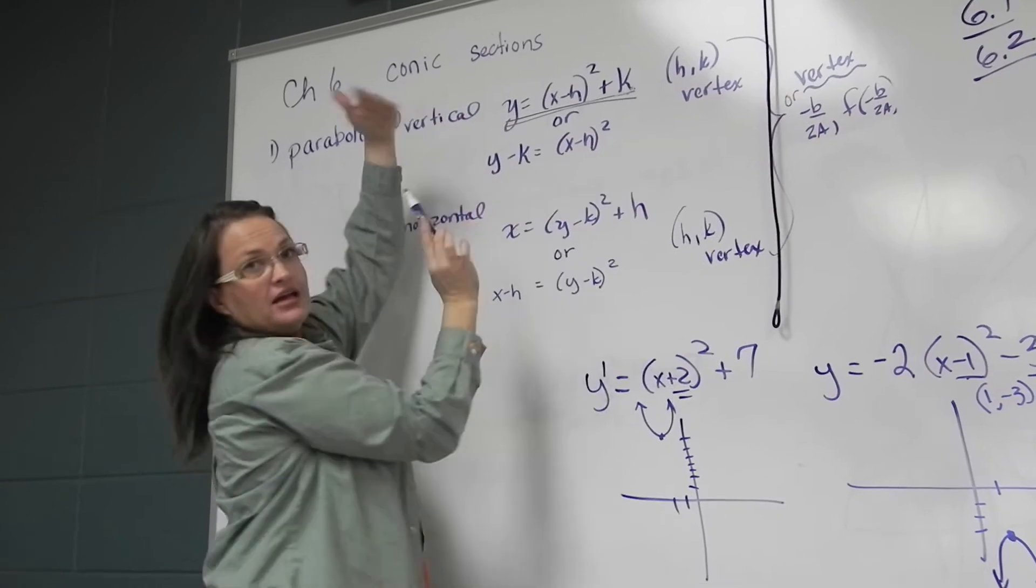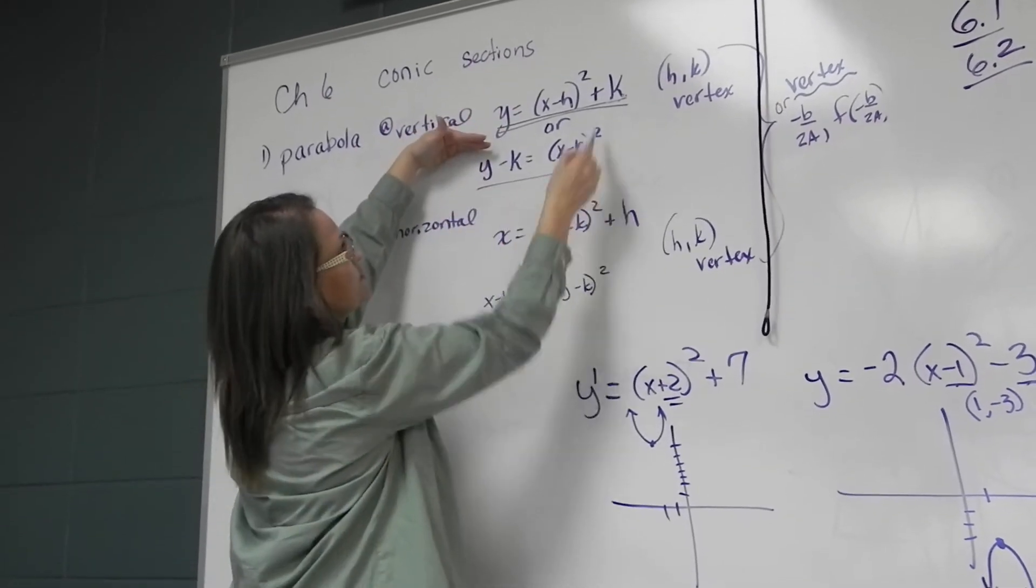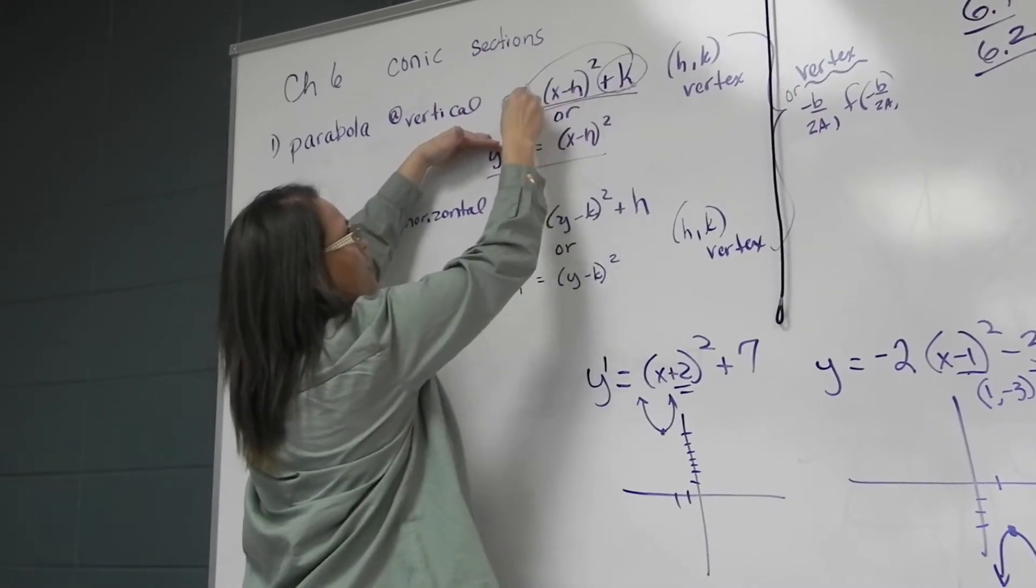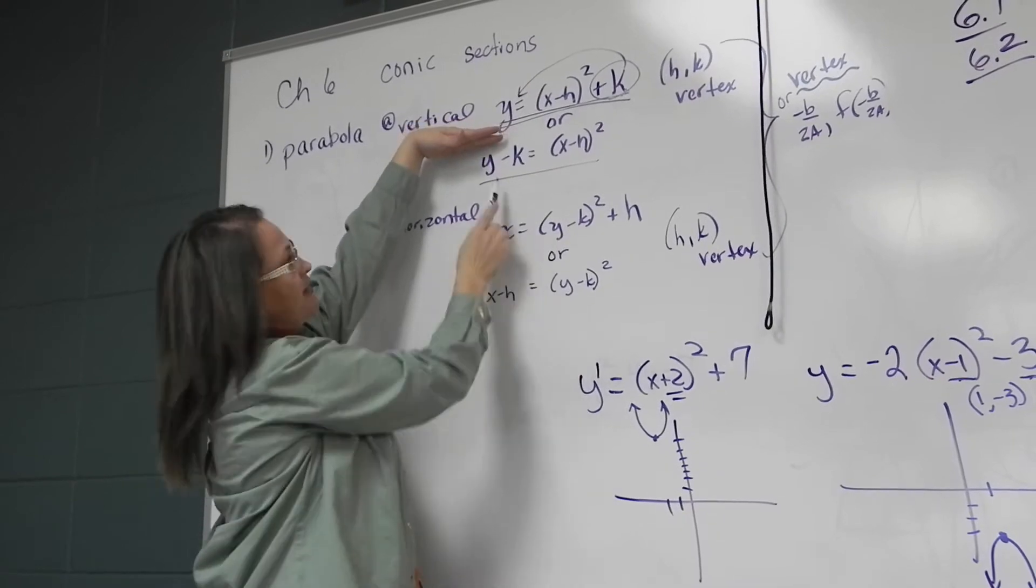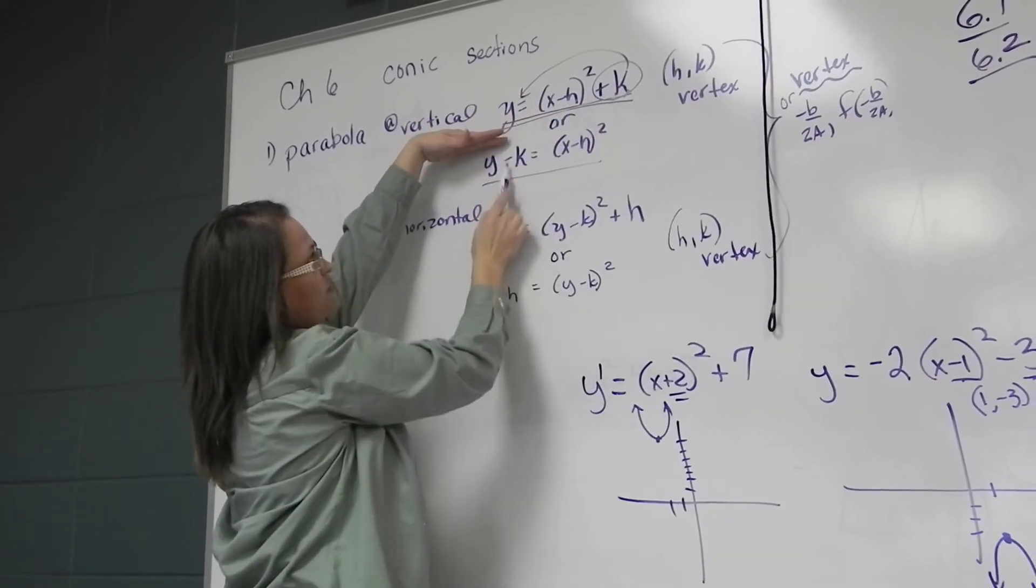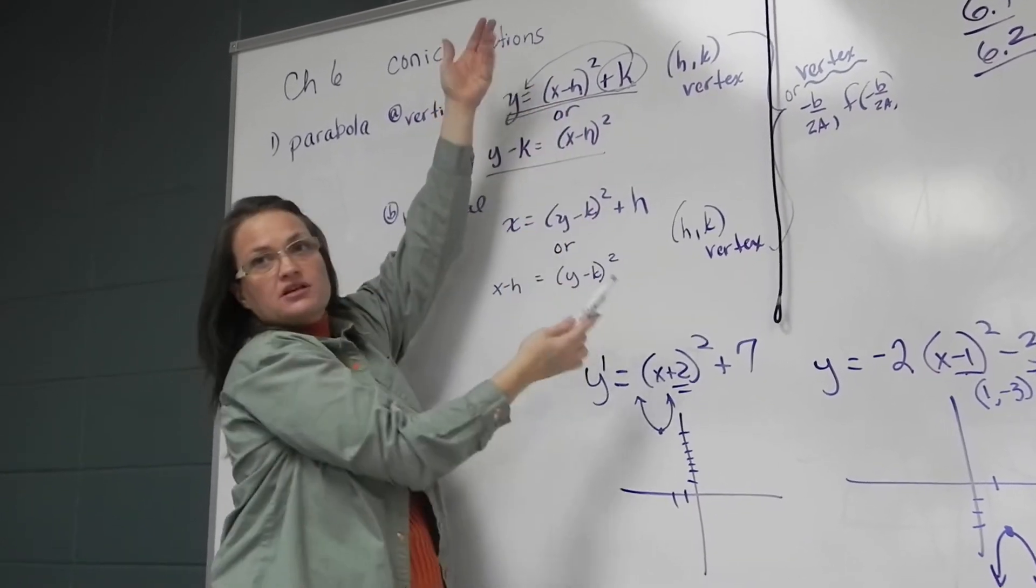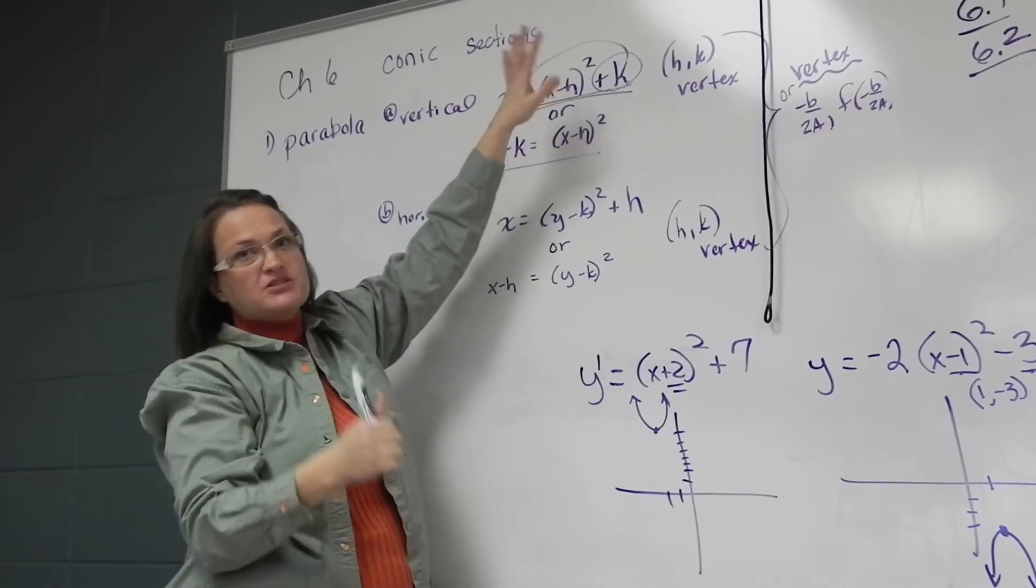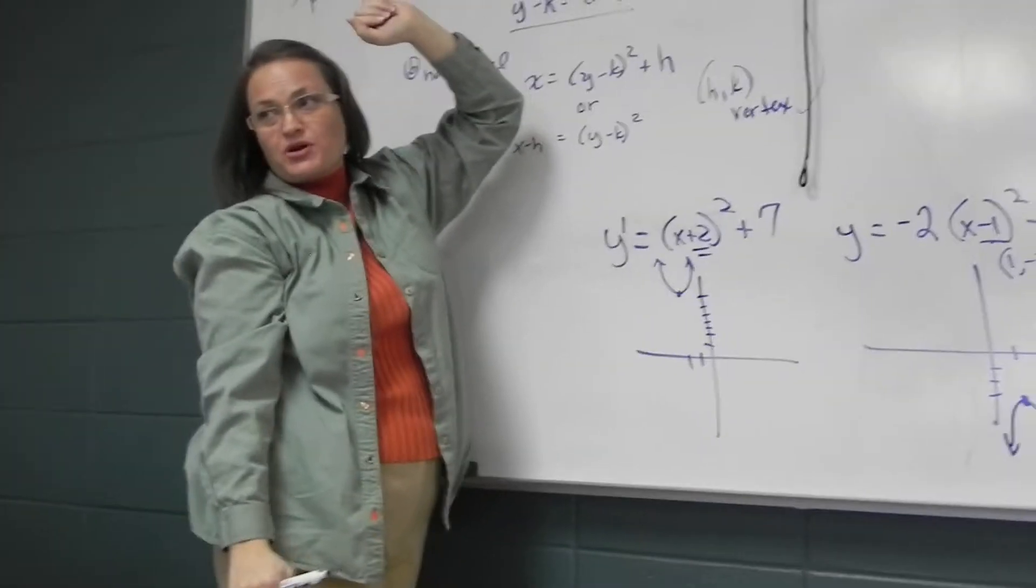In chapter 6, the book brought this K value over to the left and made it Y, you know, switching over, minus K equals. So these are equivalent statements, but just a different way the book expresses that chapter.